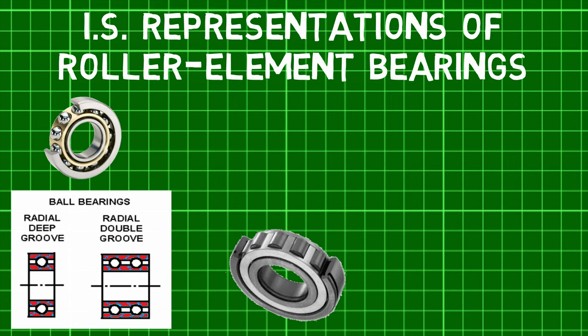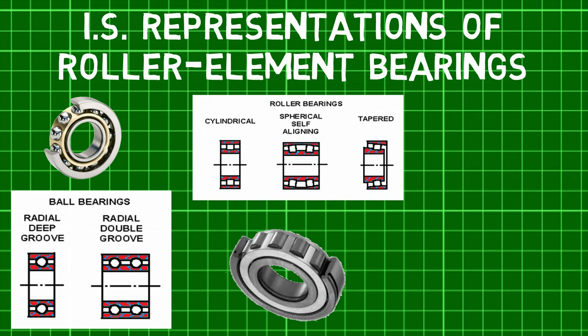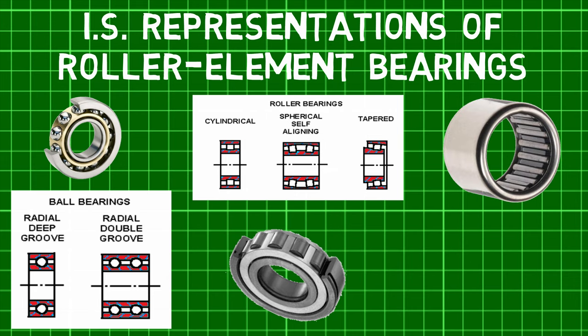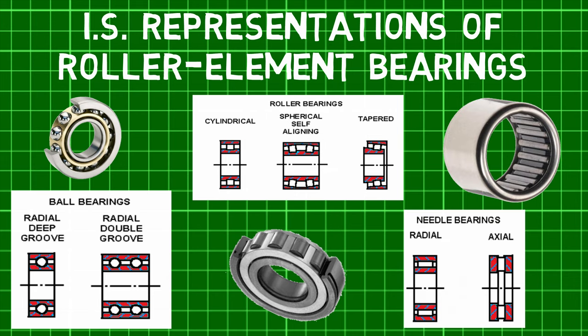Second are roller bearings, where rollers are shown as square elements between the races. Third are needle bearings, which are denoted by rectangles between the races.